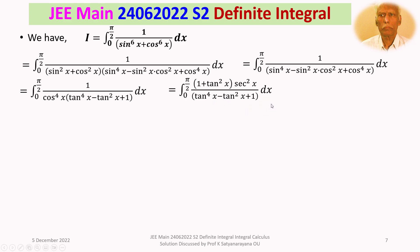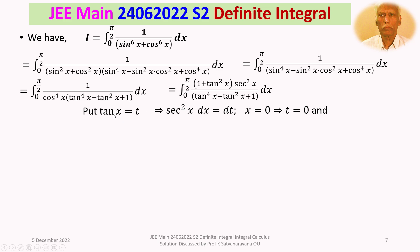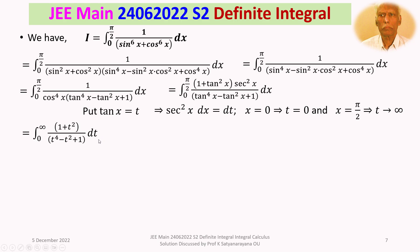We substitute tan x = t, so sec²x dx = dt. When x = 0, t = tan 0 = 0; when x = π/2, t = tan(π/2) → ∞. The limits change from 0 to π/2 into 0 to ∞. The integral becomes ∫₀^∞ (1 + t²) dt / (t⁴ − t² + 1). We then take t² common from both numerator and denominator to get ∫₀^∞ (1 + 1/t²) dt / (t² − 1 + 1/t²).